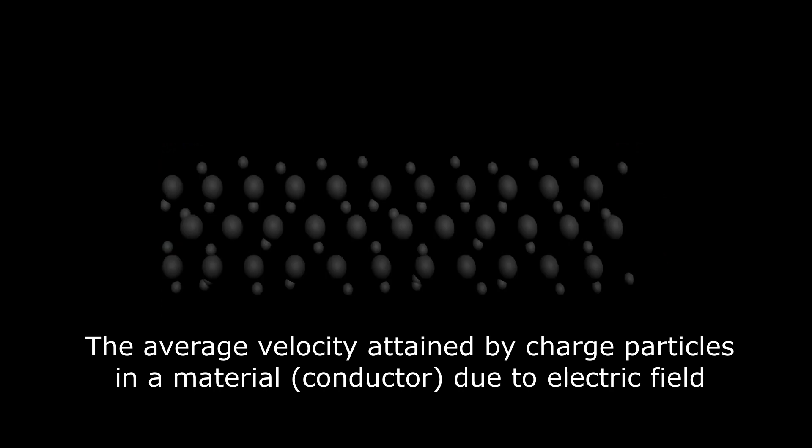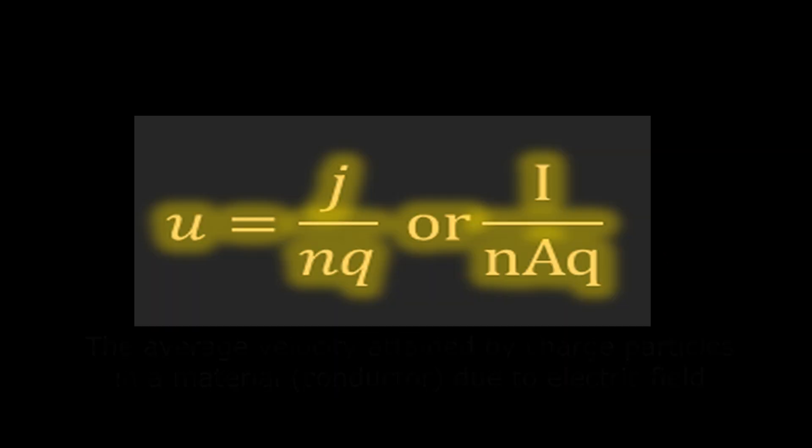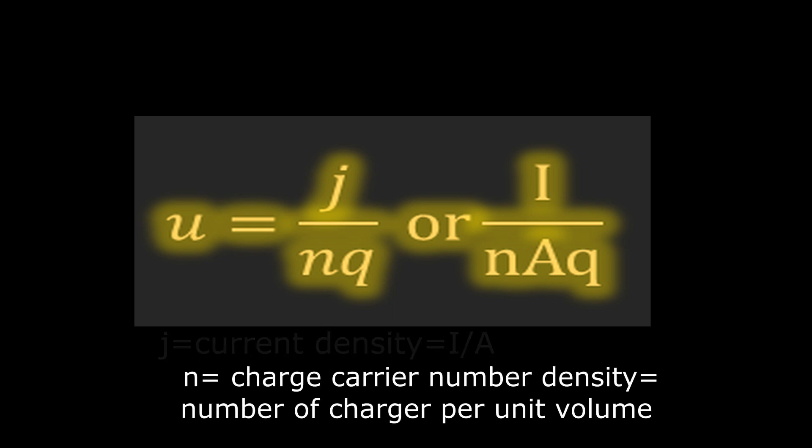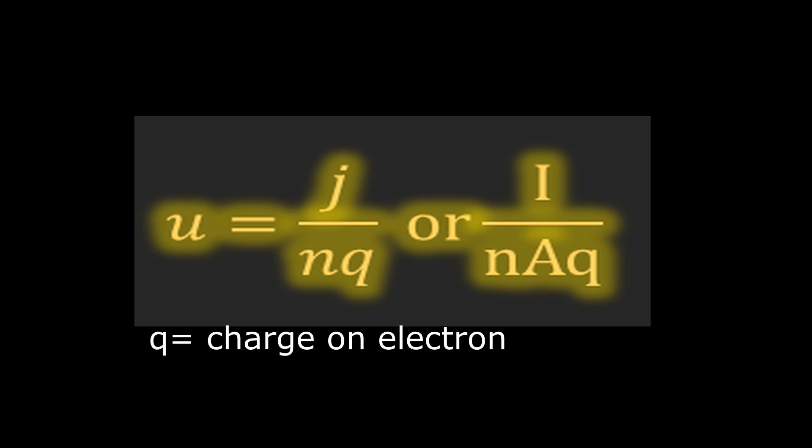Mathematically, the drift velocity can be written as U equals J divided by NQ, where J is the current density, N is the charge carrier number density, and Q is the charge on the carriers or the charge on the electrons.